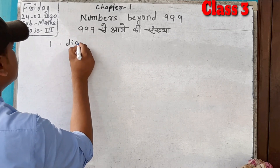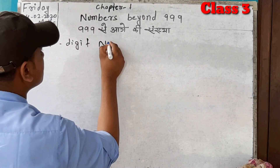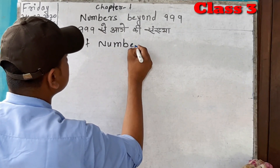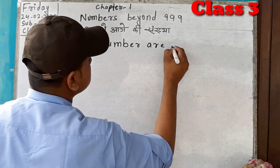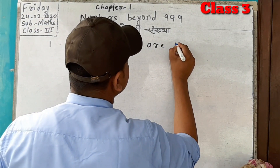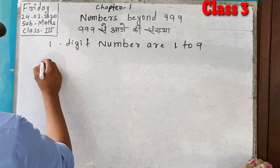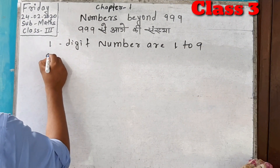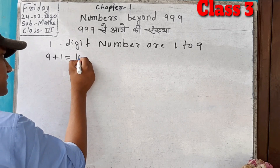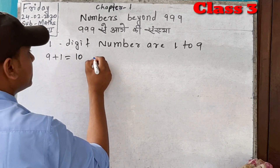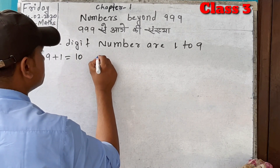One-digit numbers are 1 to 9. If we add 9 plus 1, it is equal to 10. It is a two-digit number.